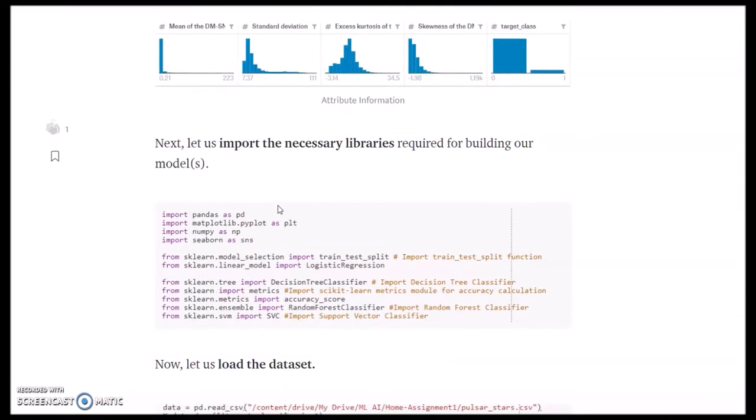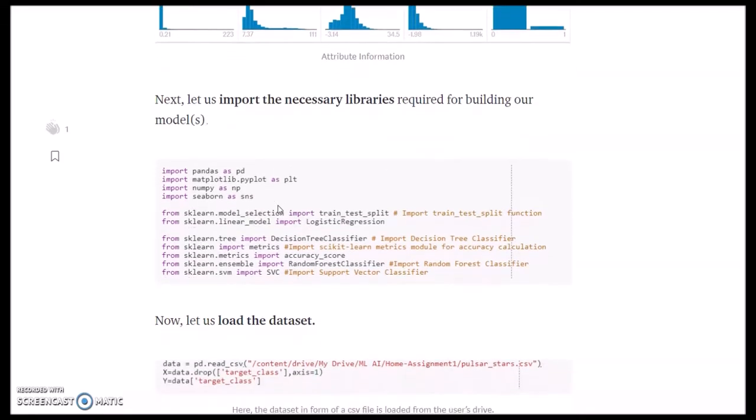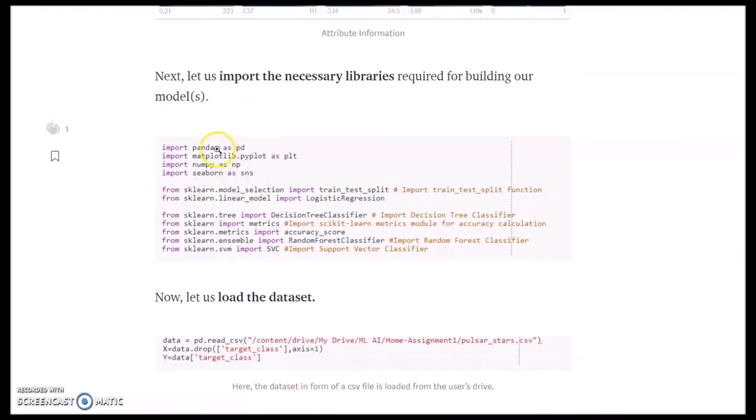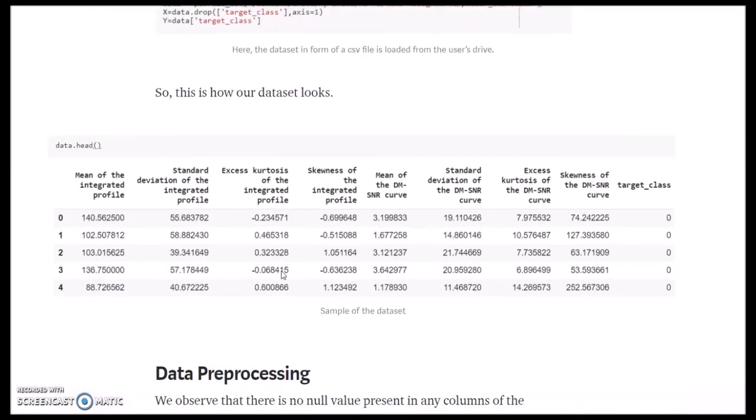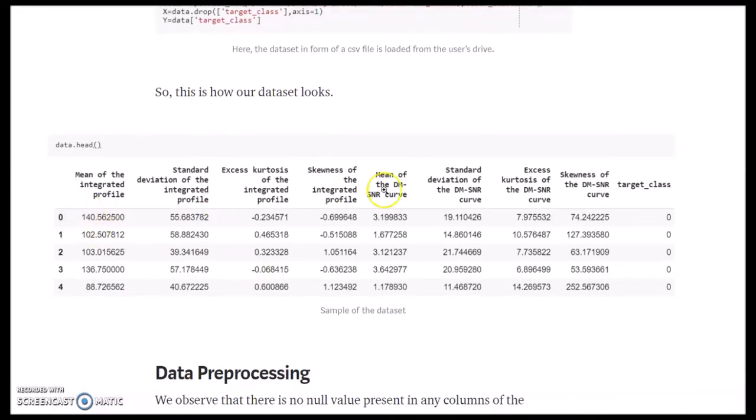Now let's start by importing the necessary libraries. We import pandas for data manipulation and analysis, matplotlib for data visualization, numpy for mathematical transformations, seaborn for heatmaps, and sklearn for machine learning algorithms. Then we load the dataset into the pandas dataframe. This is what our dataset looks like. As you can see, the eight attributes are of decimal data types and the target class is of binary integer.